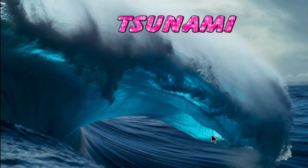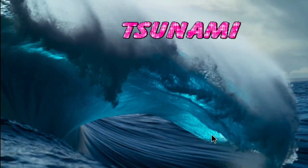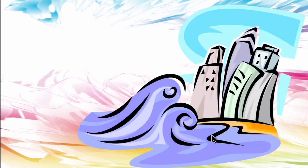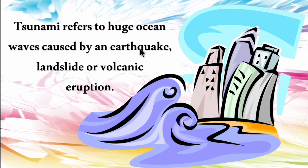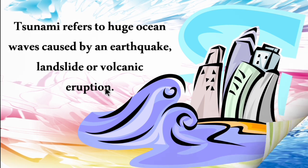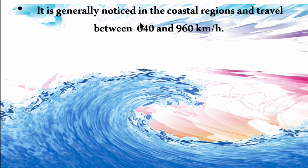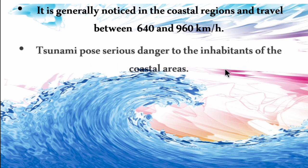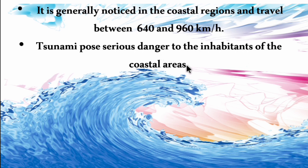The sixth major hazard is tsunami. Tsunami refers to huge ocean waves caused by an earthquake, landslide or volcanic eruption. It is generally noticed in coastal regions and travels between 640 and 960 km per hour, posing serious danger to inhabitants of coastal areas.